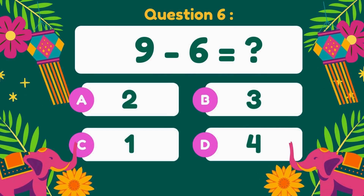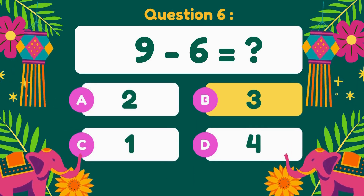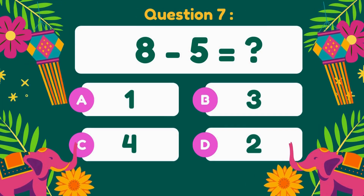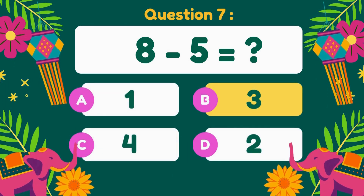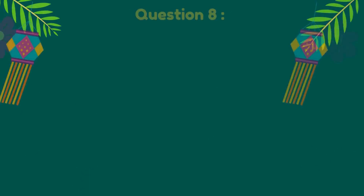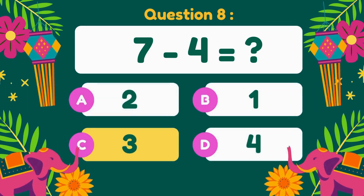9 minus 6. 9 minus 6 equals 3. 8 minus 5. 8 minus 5 equals 3. 7 minus 4. 7 minus 4 equals 3.